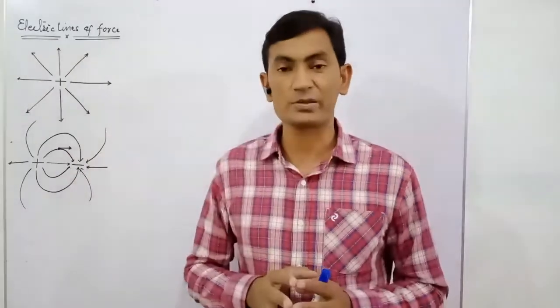The electric flux has a unit. According to the expression E dot A, since it is a dot product of two vectors, the resultant quantity must be a scalar. Therefore, electric flux is a scalar quantity. Flux can be positive when theta is less than 90 degrees.